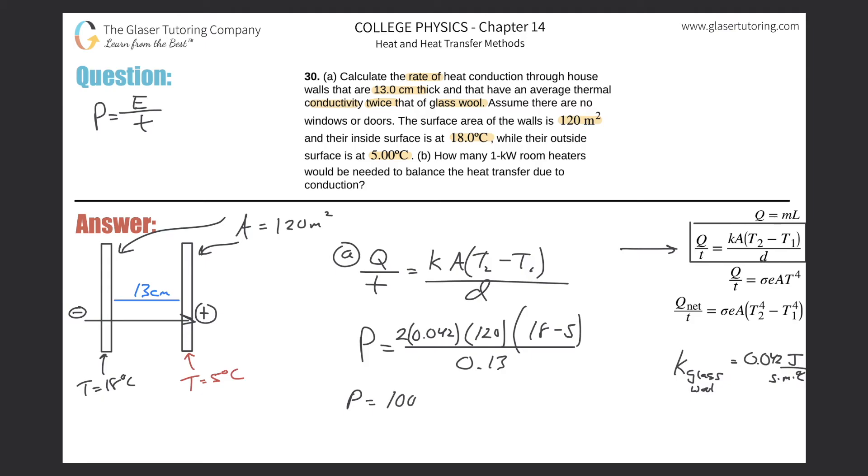About 1,008 watts, or aka joules per second, which would have been the Q over T. And this is the rate of heat conduction.